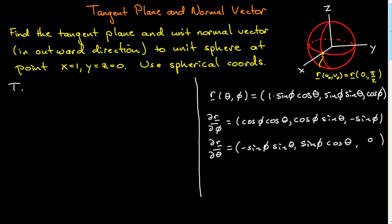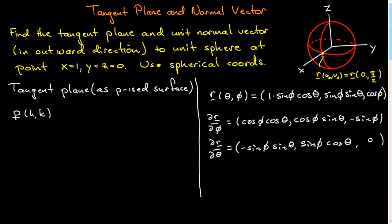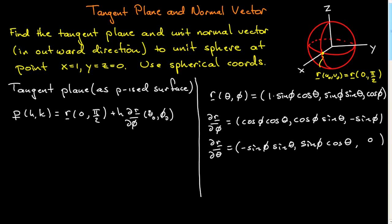This question doesn't specify in what form the tangent plane should be given, so I'm going to do it both ways. First, the tangent plane as a parametrized surface: we give an actual parametrization with two parameters h and k, mapping into R³. It's represented by the vector function p = r(θ₀, φ₀) + h·(dr/dφ) evaluated at (θ₀, φ₀), plus k·(dr/dθ) evaluated at that point. Remember these are evaluated at the point in question.